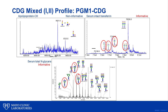Mixed CDGs have defects in either the assembly or transfer of the dolichol-linked glycan and in its processing. Seen here is a profile for PGM1 CDG. The APOC3 is normal, but the transferrin has increased disyalo transferrin along with an increased number of partially glycosylated species. In addition, there are several abnormal glycans present in the N-glycan profile.